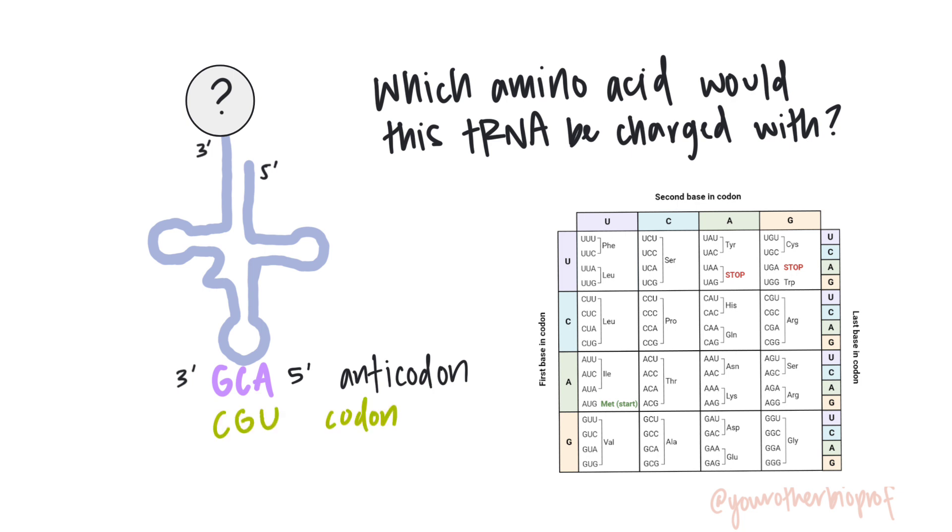G pairs with C, A pairs with U, so hopefully you got C, G, U. And keep in mind that our codon and our anticodon will be anti-parallel, meaning five prime to three prime in opposite directions. So we're going to have five prime C, G, U three prime for our codon, which is perfect because that's the exact orientation five to three left to right that we see in our codon dictionary. So we can take this right over here, find C, G, U and that's arginine.